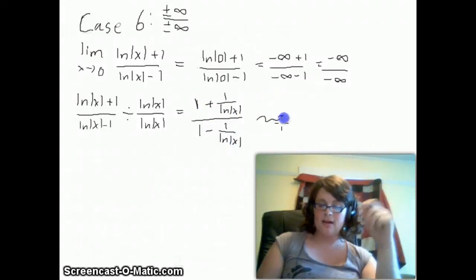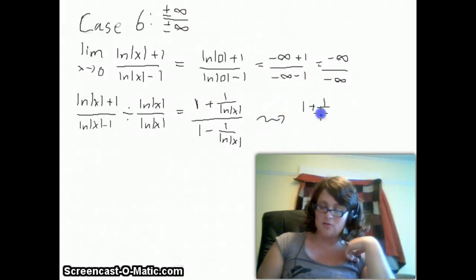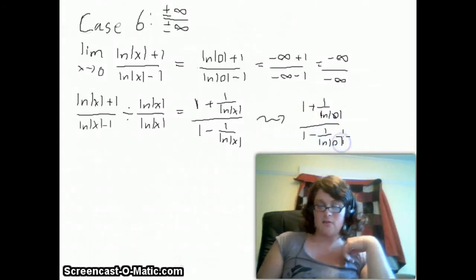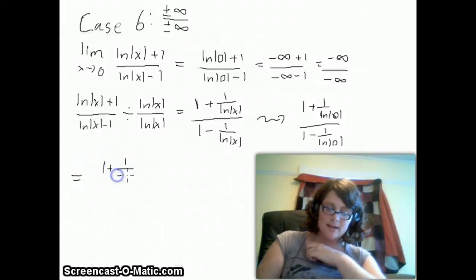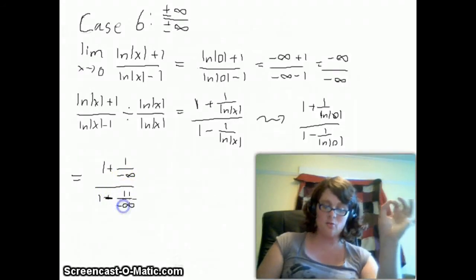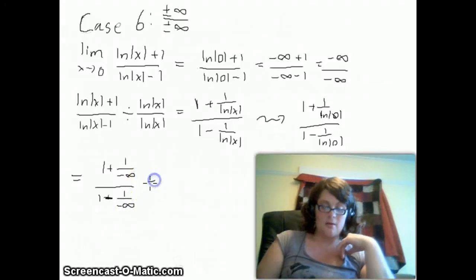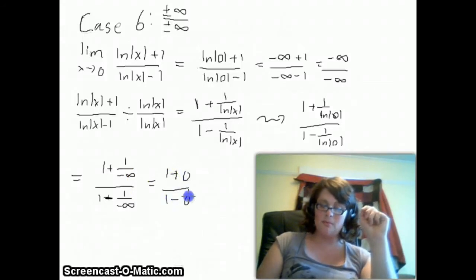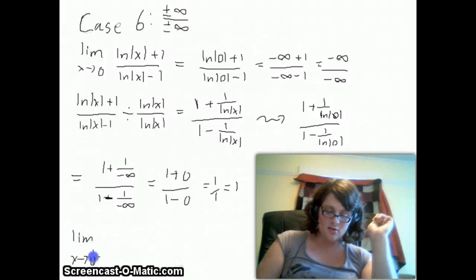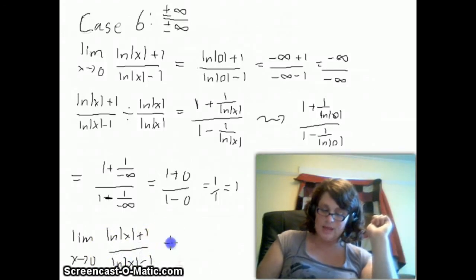Now we plug in x equals 0 again. We get 1 plus 1 over ln|0|, all over 1 minus 1 over ln|0|. ln of the absolute value of 0 is minus infinity, so we have 1 plus 1 over minus infinity, over 1 minus 1 over minus infinity. When we take anything divided by plus or minus infinity, that always gives you 0 — this is case 2. So we have 1 plus 0 over 1 minus 0, which is 1 over 1. This is case 1, and it gives you 1.